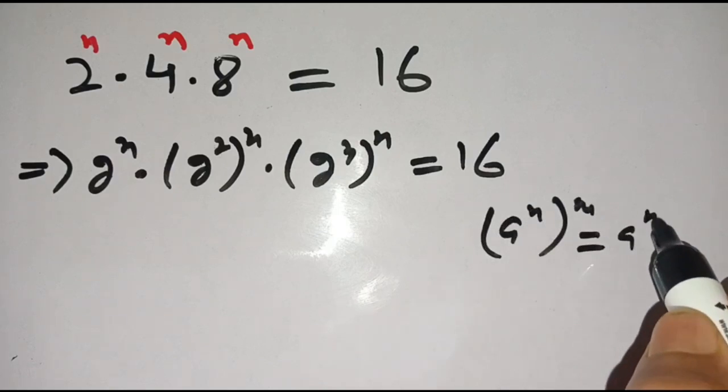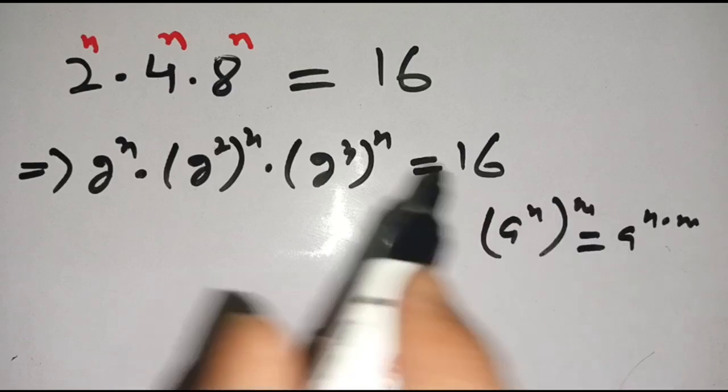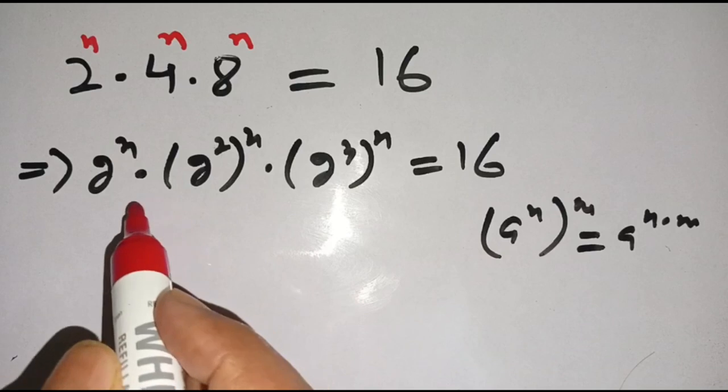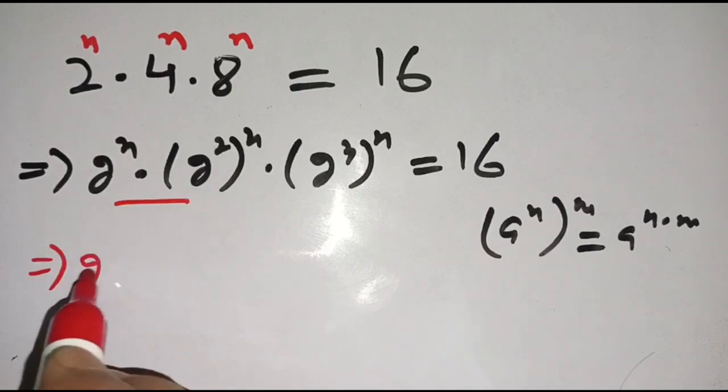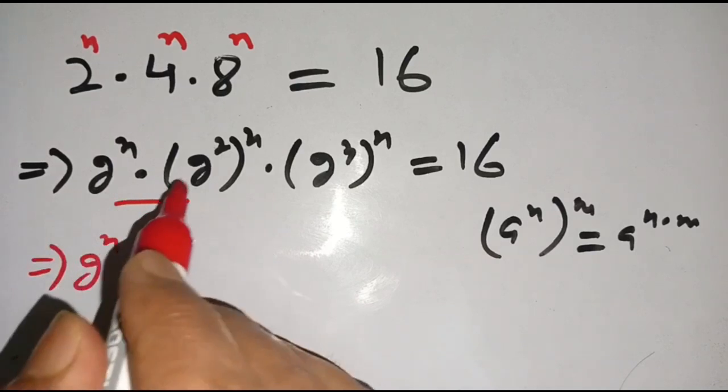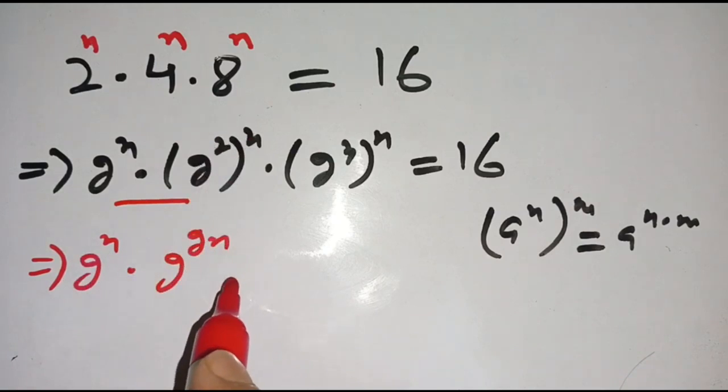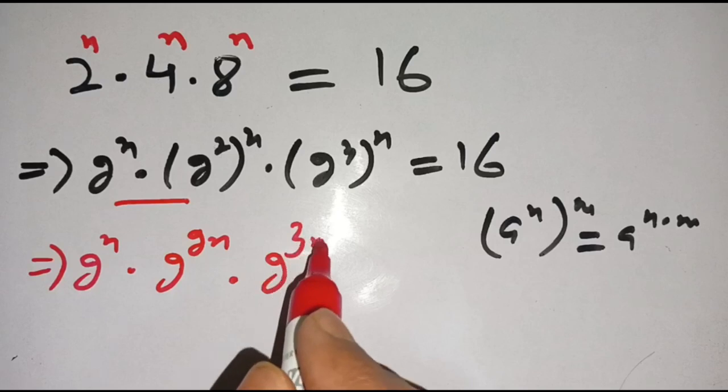We get 2 power n times 2 power 2n times 2 power 3n is equal to 16, which can be written as 2 power 4.